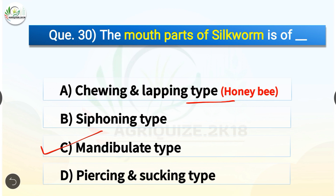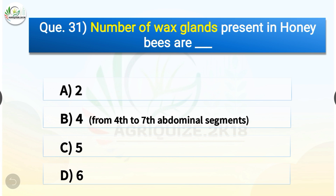Question number thirty-one: Number of wax glands present in honeybees are how many? The options are: 2, 4, 5, or 6. The correct answer is option B — 4. The number of wax glands present in honeybees are 4, located from the 4th to 7th abdominal segments.